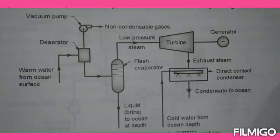In the open cycle system, warm water from the ocean surface is taken into a reaerator where air is removed using a vacuum pump, and non-condensable gases are also removed from the warm water. That warm water is then supplied to a flash evaporator where evaporation of the warm water takes place. The remaining liquid brine is released at depth to the ocean, and the steam generated in the flash evaporator is passed to the turbine.